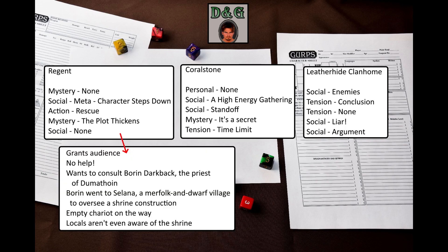Now let's interpret this all together. The regent Wadwalyn Darkback grants the characters an audience, unless they mess up majorly, but she does not provide any assistance and consults with Boring Darkback, a high priest of Dumathoin. She believes this to be an important decision, but feels too incompetent to make it herself. The high priest, however, is absent — he had just left the city to oversee the construction of a shrine to Dumathoin in the merfolk village of Selana, where dwarves and minorities feel left out without a place of worship. If the PCs travel to Selana, they find Boring's hippocampus chariot on the way. The chariot is empty, with no sign of the priest. If they go to Selana, they find out that the local dwarves and merfolk are not even aware of the shrine being constructed. I, as a GM, should introduce some clues both in the chariot and in the village to point the characters in the right direction.